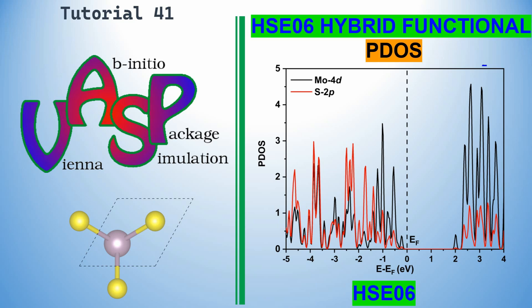Dear friends, this is my tutorial 41 in VASP. In this tutorial you can learn how to do PDOS calculations using HSE06 hybrid functionals. Last video, tutorial 40, I made the band structure calculation using HSE06 hybrid functional. I am going to use the same calculation results to plot this PDOS. If you want to know how to do that hybrid functional band structure calculation, please watch my tutorial 40.